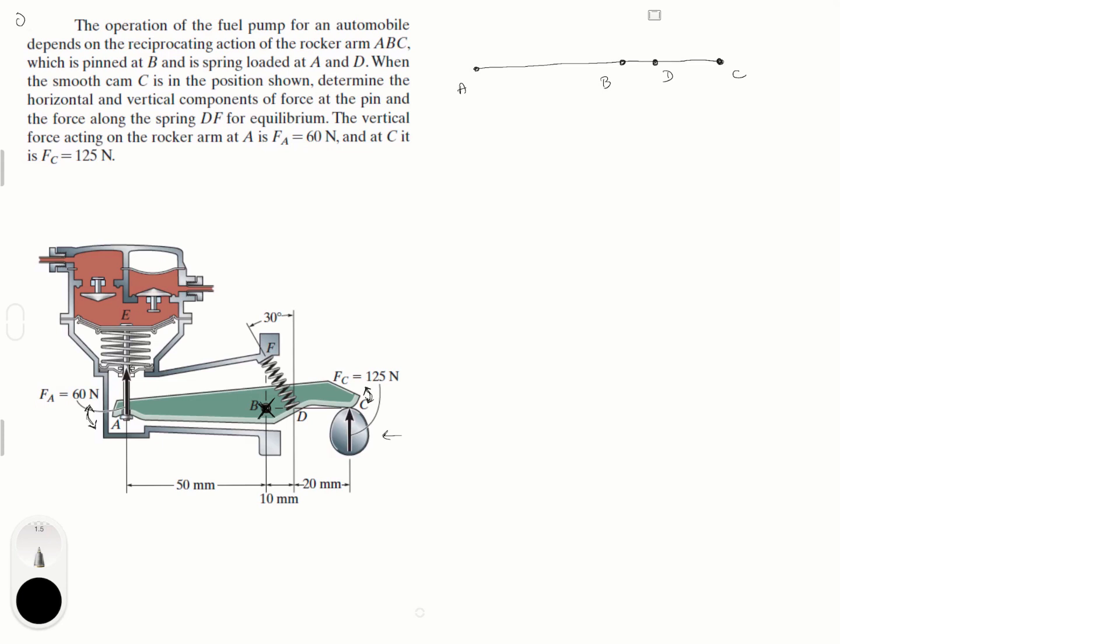And then we're going to draw the free body diagram and all the forces that act on this. I'm going to call this force going straight up, which is this one right here, and I'm going to call it F_A and I know it is equal to 60 newtons. Now at D we have the spring.